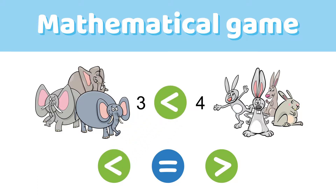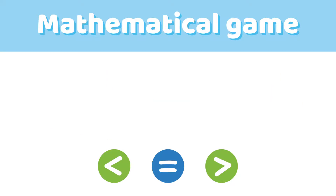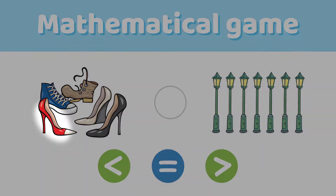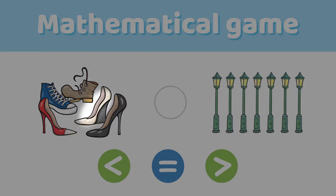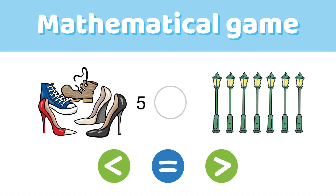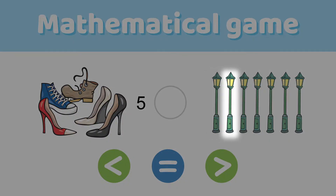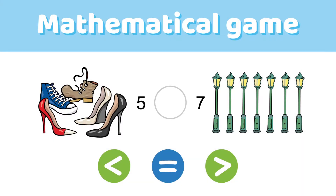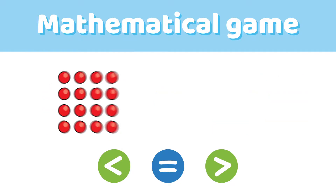Three is less than four. Well done! Can you do this? Let's count on the left: one, two, three, four, five. We have five items on the left. Let's do the same thing on the right: one, two, three, four, five, six, and seven. We have seven items on the right. Five is less than seven. Good job!